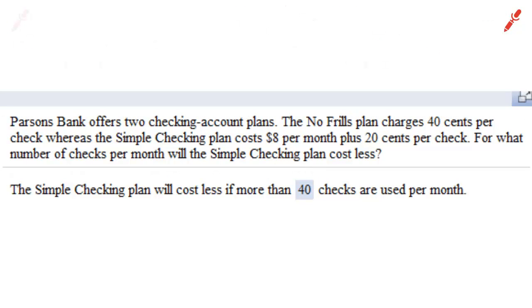Parson Bank offers two checking account plans. The no frills plan that charges 40 cents per check, whereas the simple checking plan costs $8 per month plus 20 cents per check. For what number of checks per month will the simple checking cost less? Cost less than what? Than the no frills. So let's write it again in that word way that's not really technically correct, but it gives us the idea what we're dealing with. Simple is less than no frills.